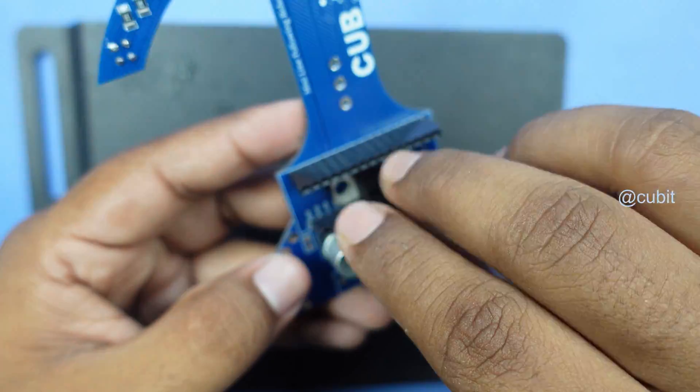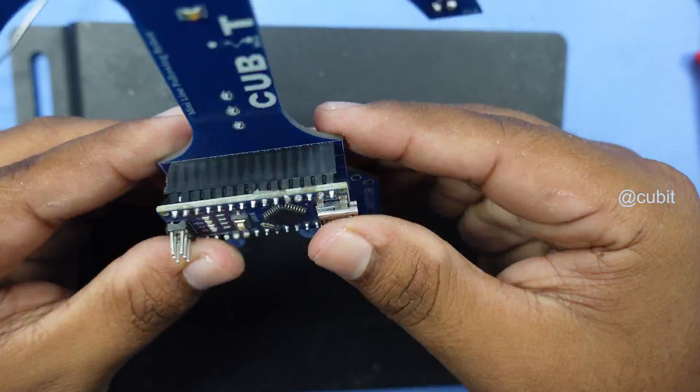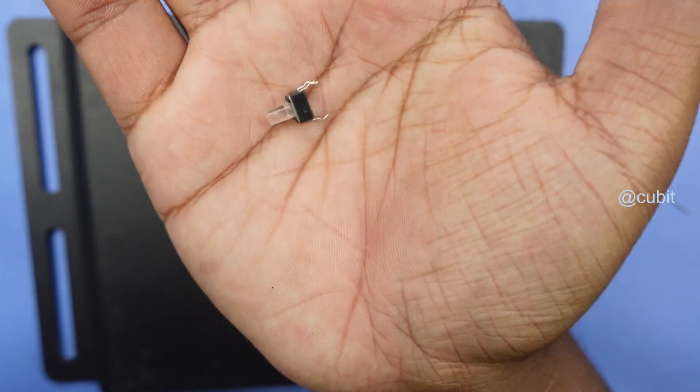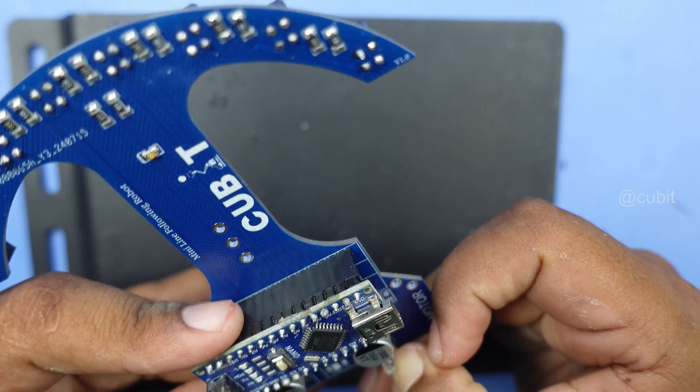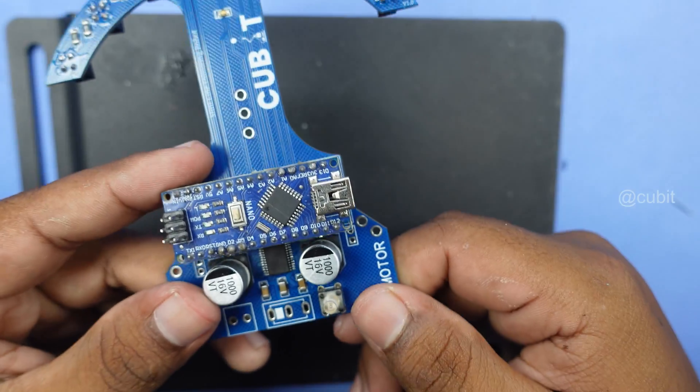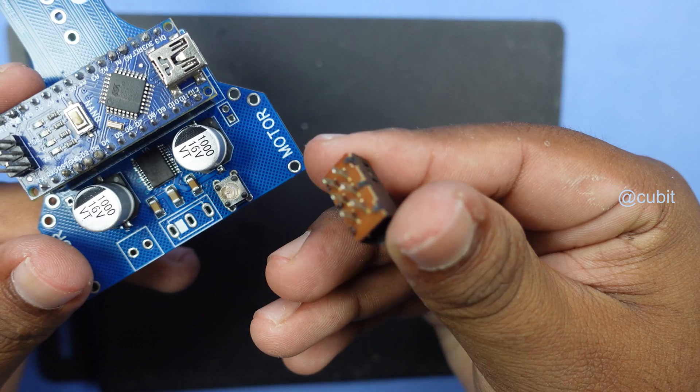We use a female header pin to mount the Arduino Nano onto the board, allowing for easy installation and removal. To control the robot, we add a push button, and we also install a switch to manage the power for the PCB.